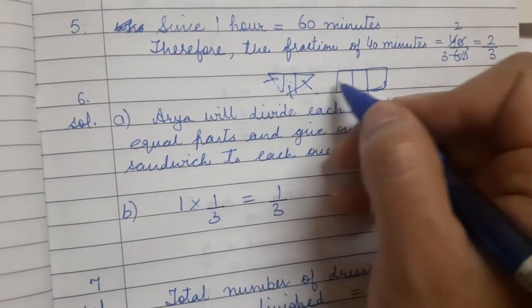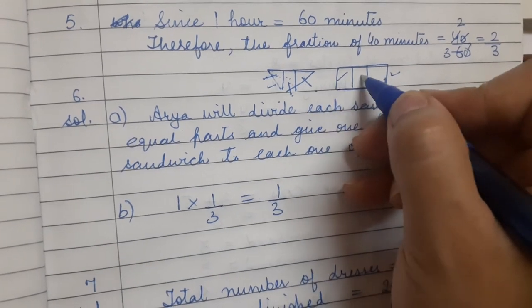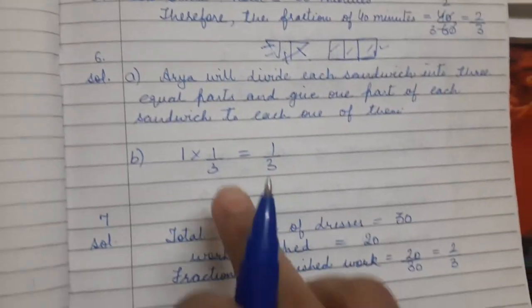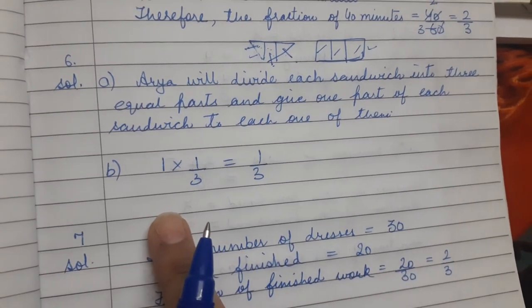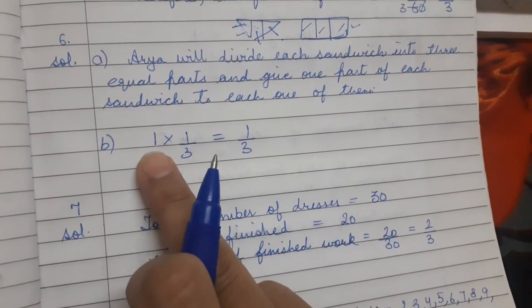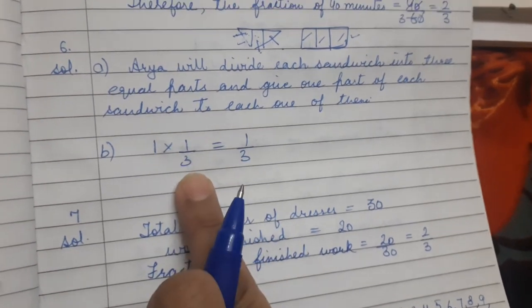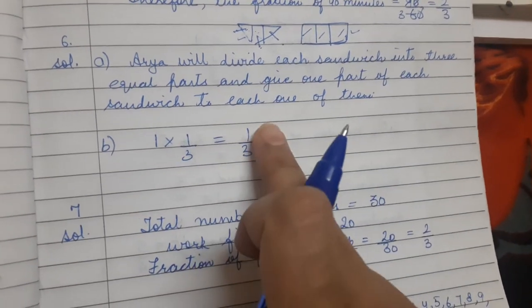So there will be 3 parts of one sandwich and they will get 1 part, each child. Like this is a second sandwich, suppose this is a vegetable or a jam, so 1 part to each child. Part B question: what part of a sandwich will each boy receive? One third part of each sandwich, so that is equal to 1 by 3.